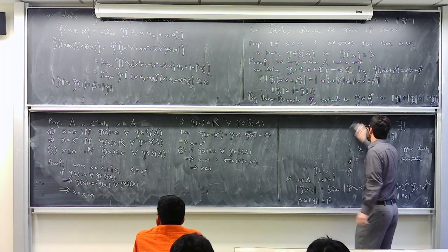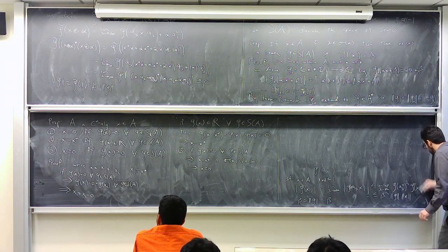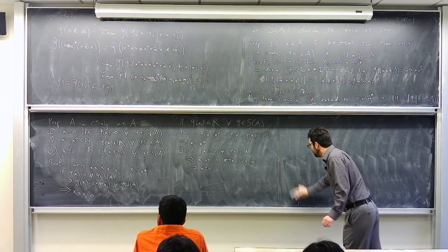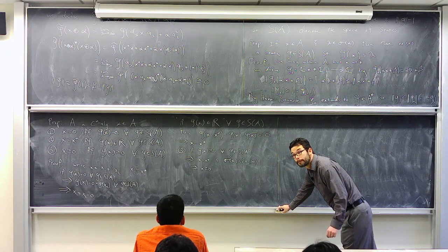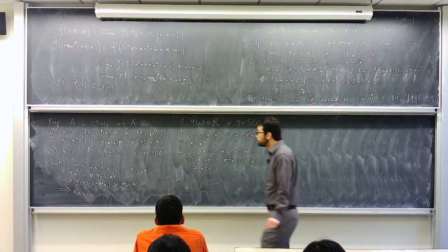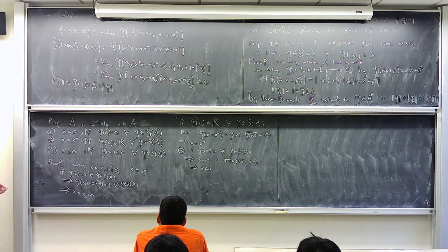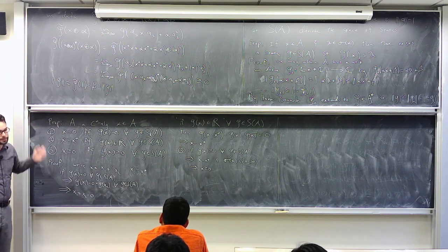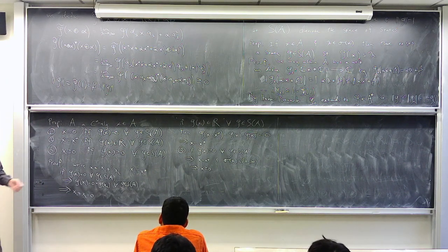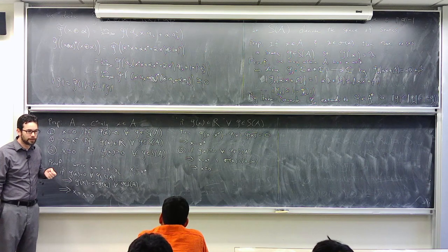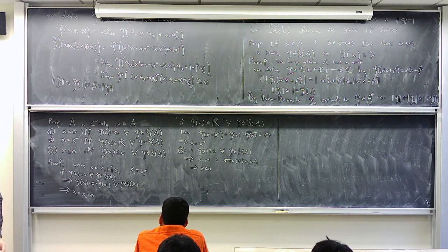So you can tell quite a lot from just the states — there are enough to separate points. One can also characterize normality: x is normal if and only if φ(x*x) = φ(xx*) for all states φ, i.e., x*x - xx* = 0 by part (1).